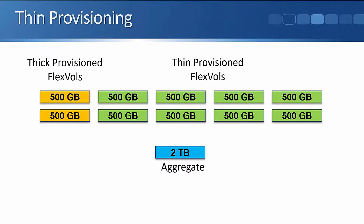Thin and thick provisioning are not mutually exclusive with each other on the same aggregate. Back to our earlier example: maybe two of the servers are mission critical and we want to make sure they definitely have that full 500 gigabytes available to them. In that case, in the same aggregate, we can make two 500 gigabyte thick provisioned volumes for those mission critical workloads. Our other eight volumes will be 500 gigabytes thin provisioned. One terabyte will be pre-allocated to the thick provisioned volumes, and the other terabyte will be available on a first-come, first-served basis for the other eight volumes.